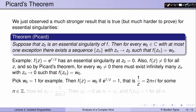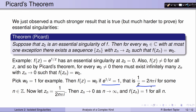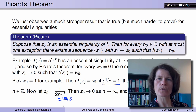For example, take w0 = 1. We want e^(1/z) = 1, which means 1/z needs to be of the form 2nπi, so z_n = 1/(2nπi). Those z_n clearly go to 0 as n goes to infinity, and f(z_n) = 1 for all n. In the next lecture, we'll start learning about the residue theorem and how it relates to functions with isolated singularities.